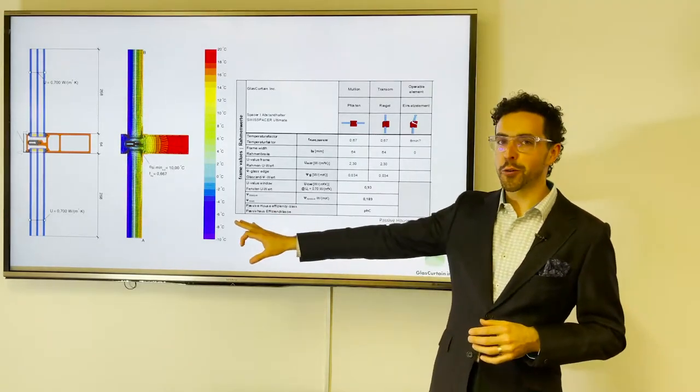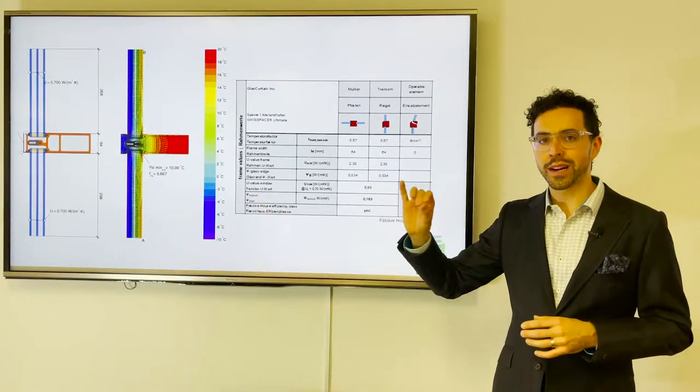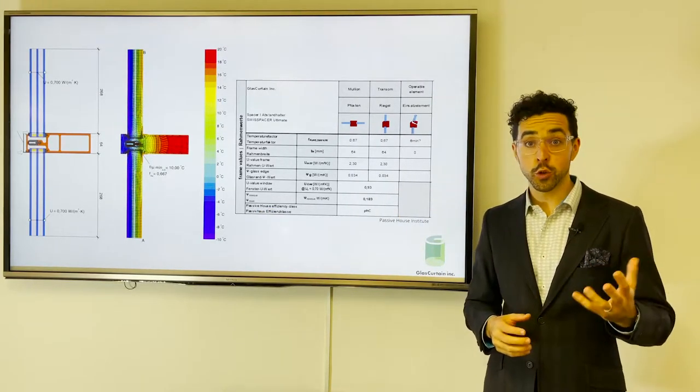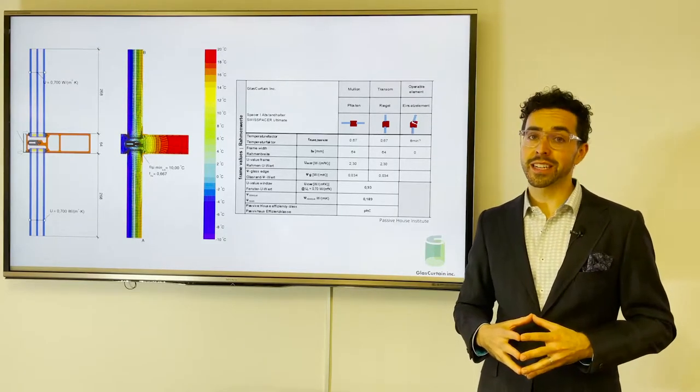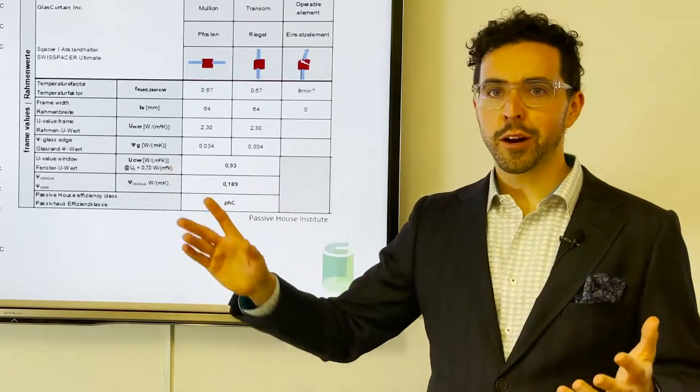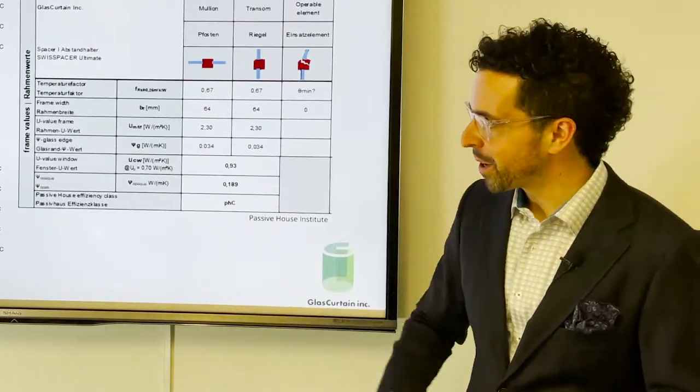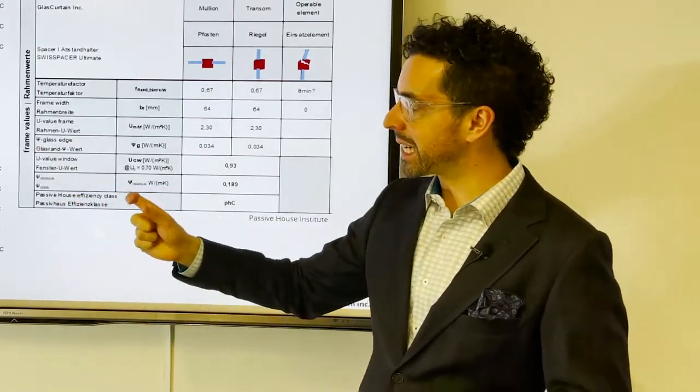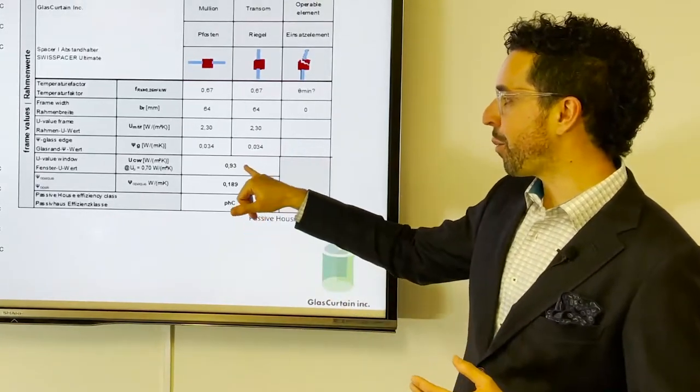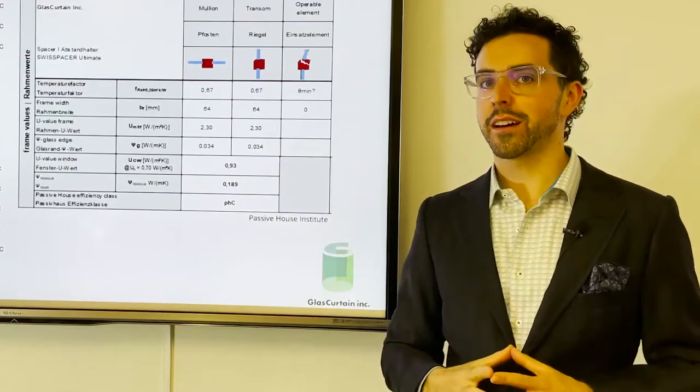And they limit the glass performance in cool temperate climates to 0.70 Watts per meter squared Kelvin, and limited to 0.52 Watts per meter squared Kelvin in cold climates. And so we thought our system right out of the box would be good enough for the cool temperate climate. We tested it with the limited glazing, 0.7 and the overall system was 0.93 Watts per meter squared Kelvin.